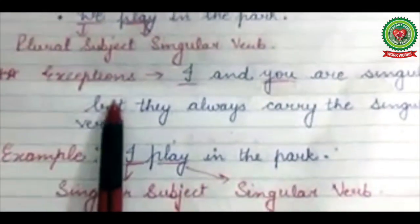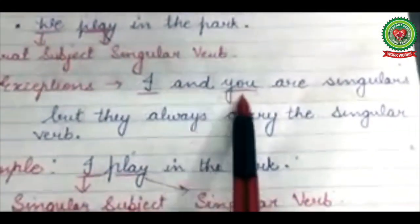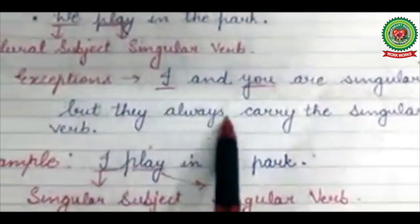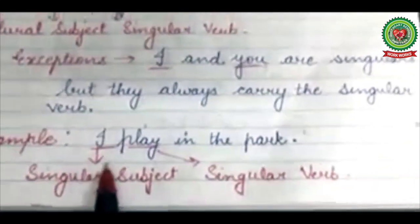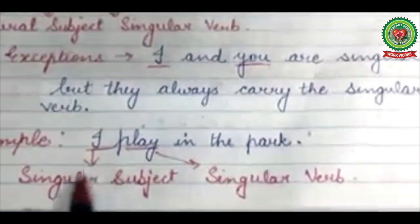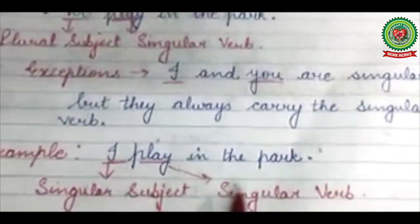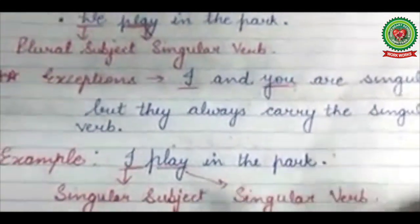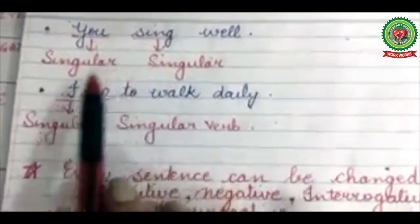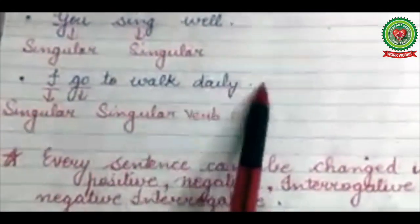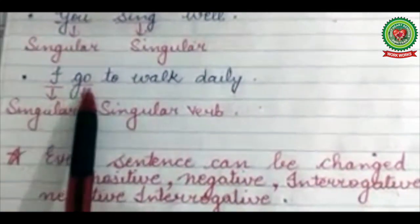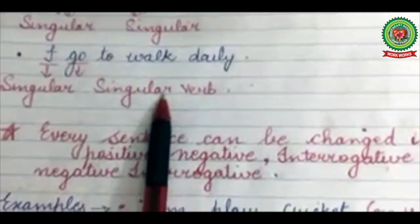But there are always some exceptions. 'I' and 'you' are singular subjects but they always carry a singular verb with them. For example: I play in the park — 'I' is singular and 'play' is a singular verb. You sing well — 'you' is singular and 'sing' is also singular. I go to walk daily — 'I' is singular and the verb is also singular.